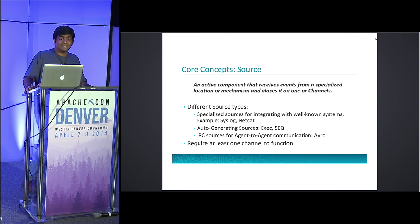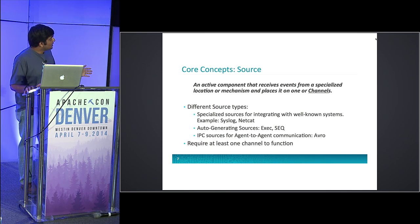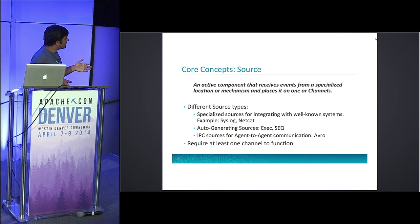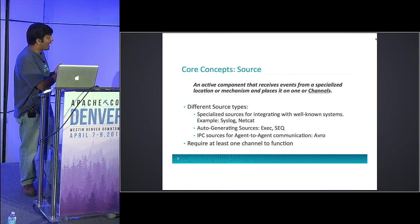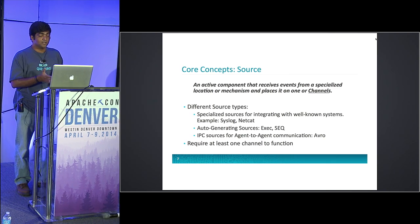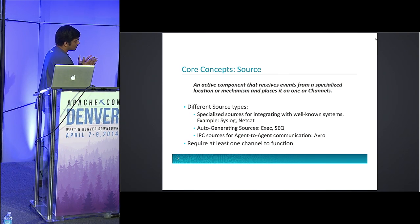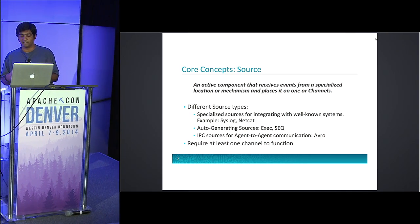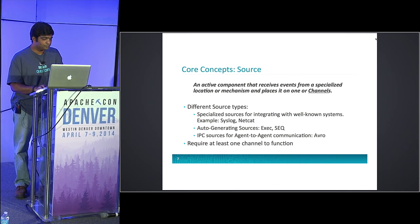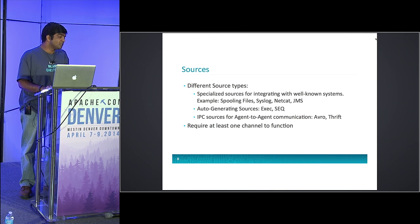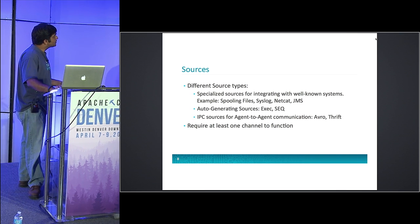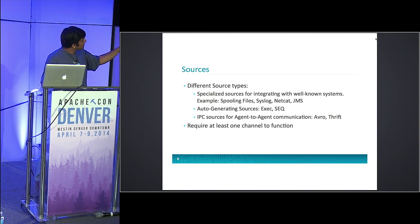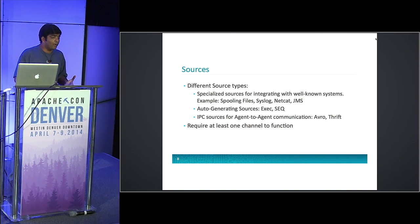Flume uses IPC to talk between Flume agents and to receive data. The IPC Flume uses between agents is Avro's Netty Avro IPC format, which is scalable and well-tested. For Flume-to-Flume communication, we recommend using Avro, though we do support Thrift — we tell people to use Thrift only if they're sending data from another language. There are many sources bundled into Flume. The most important ones are spooling file source, JMS source, Avro source, and Thrift source.